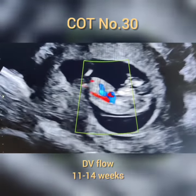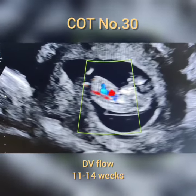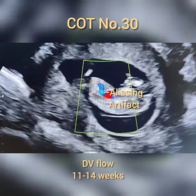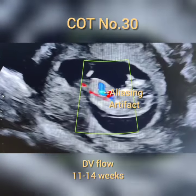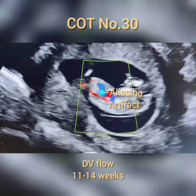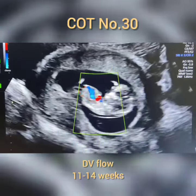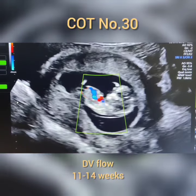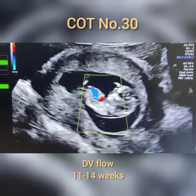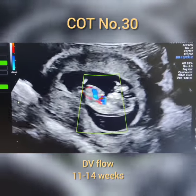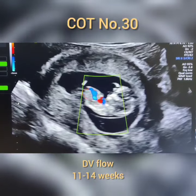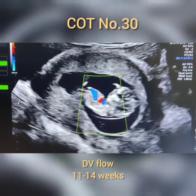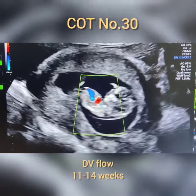This is an 11 to 14 week fetal ultrasound — what you're seeing is the sagittal section of the fetus. That white color thing is the aliasing artifact, which indicates where the ductus venosus (DV) is going to arise. So it's an artifact from which we know where the DV is going to come from — that's why it's called the aliasing artifact.